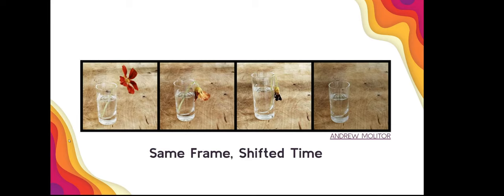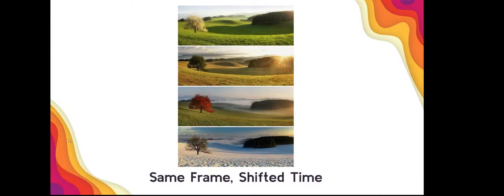So here's one simple story: flower wilting and going away. Same exact frame, and the image changes over time. Here's a little bit longer time. One whole year of an exact same frame to show a story of time.